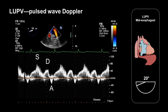We can time each of these waves using the ECG trace on the screen. The ventricular systole, or S wave, occurs just after the QRS complex. The ventricular diastole, or D wave, occurs during diastole. And the A wave, which corresponds to atrial contraction, occurs just after the P wave.